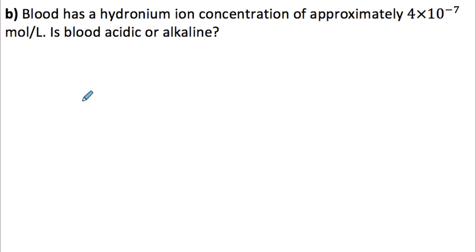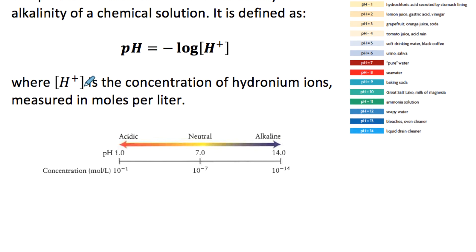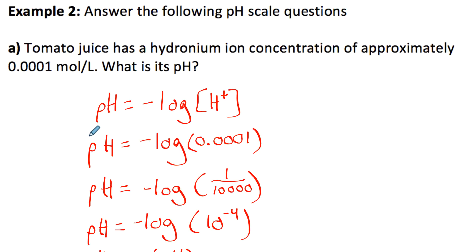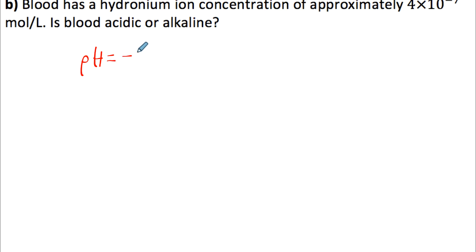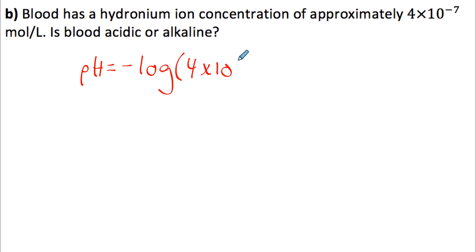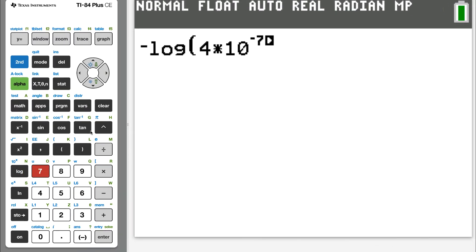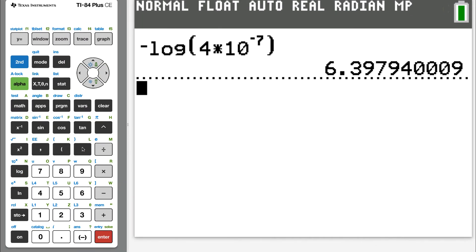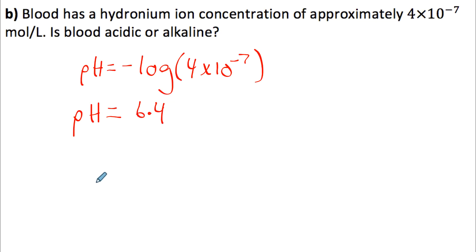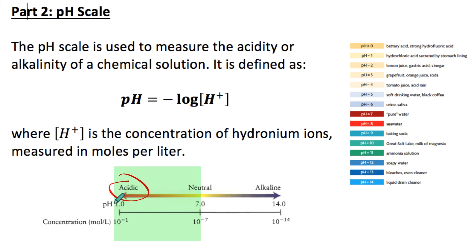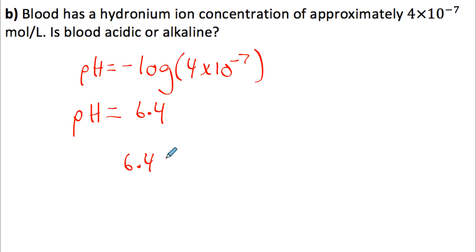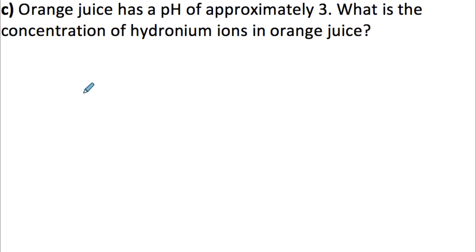Part b: blood has a hydronium ion concentration of about 4 times 10 to the negative 7 moles per liter. Is blood acidic or alkaline? pH less than 7 is acidic; greater than 7 is alkaline. Calculating pH equals negative log of (4 × 10⁻⁷) gives about 6.4. Since 6.4 is less than 7, blood is slightly acidic.